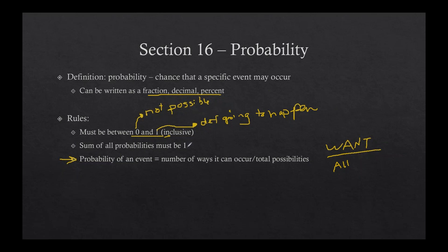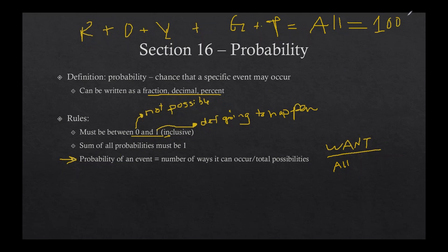The middle rule: the sum of all probabilities must be equal to one. I explain this with a bag of Skittles. We have red, orange, yellow, green, and purple Skittles — five colors. If we open a bag, pour them out, and separate them, we could find the probability of picking out each color. If I add those five probabilities together, they add up to all — which means 100%, which is one. So the sum of all probabilities of the separate candies adds up to the whole thing, giving you 100%.